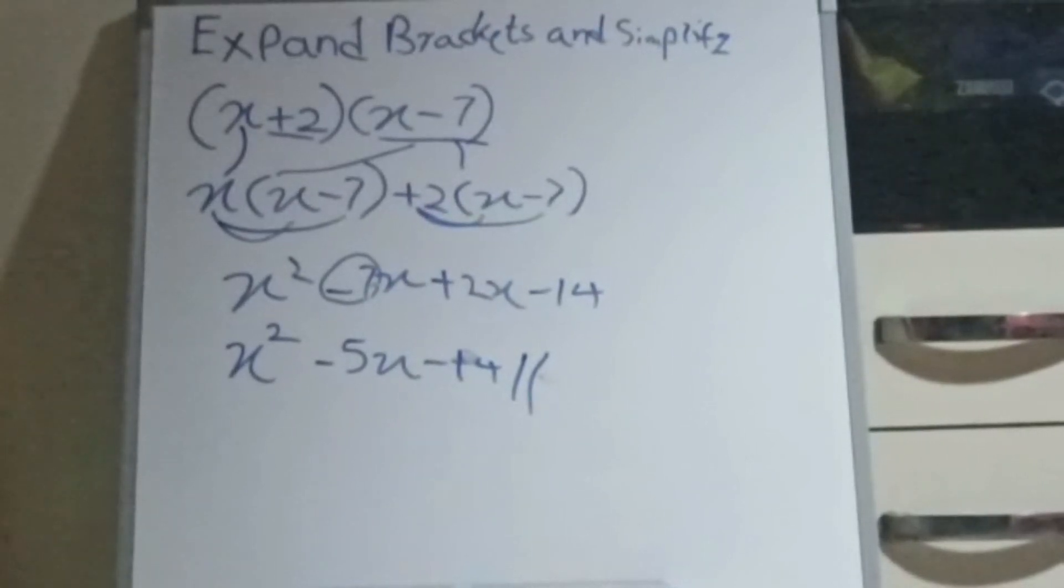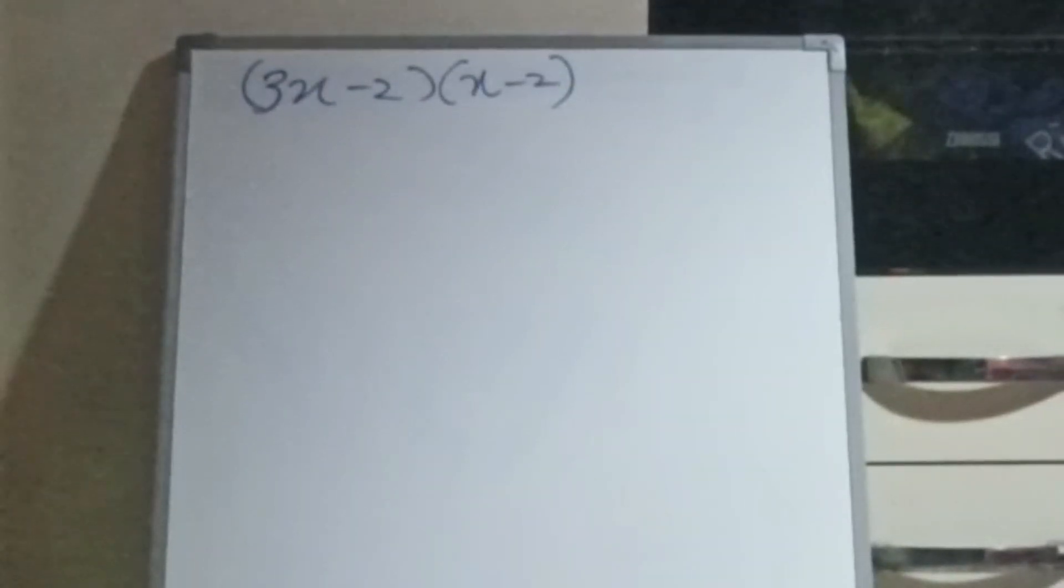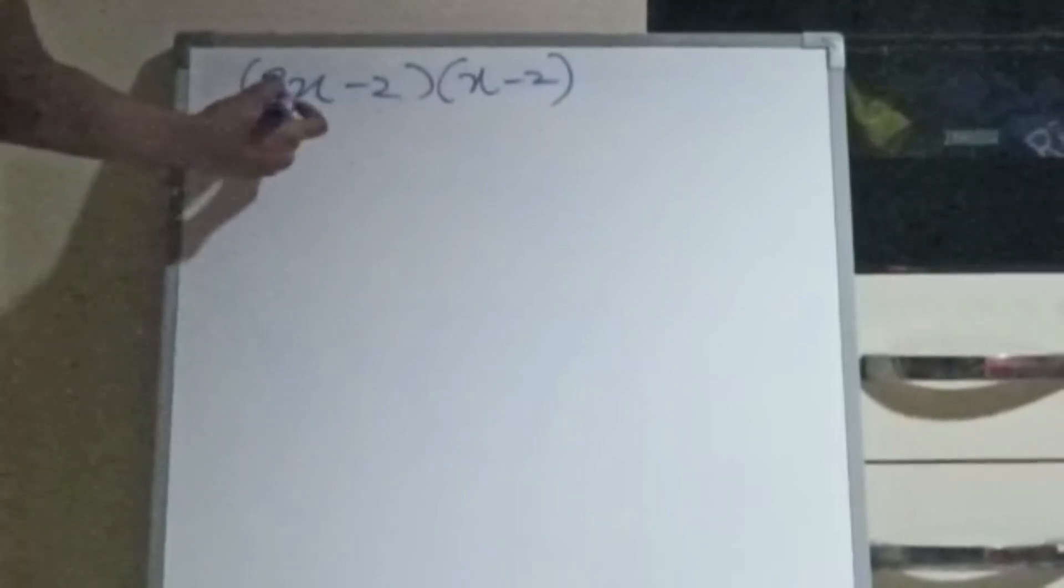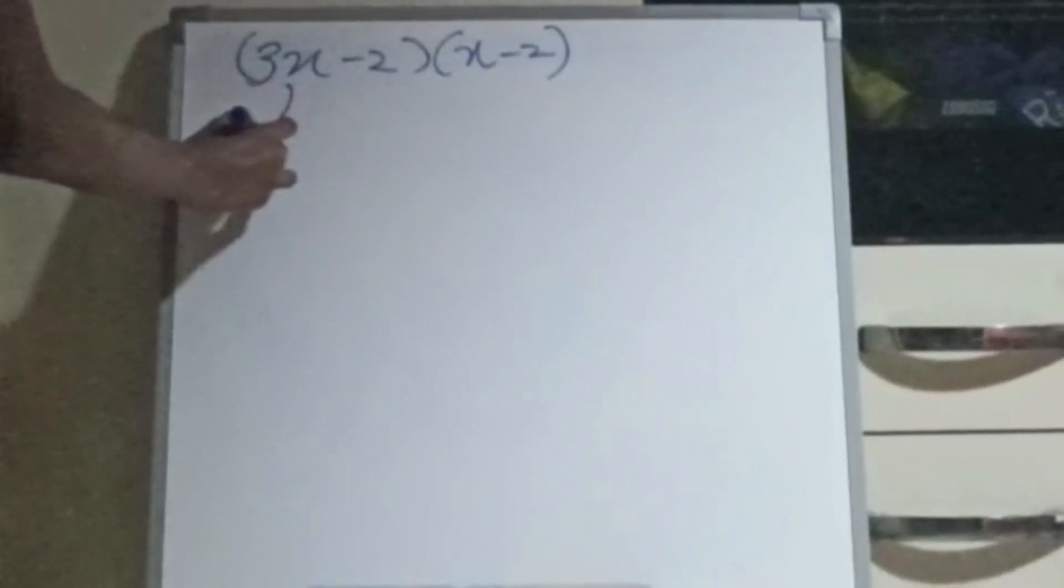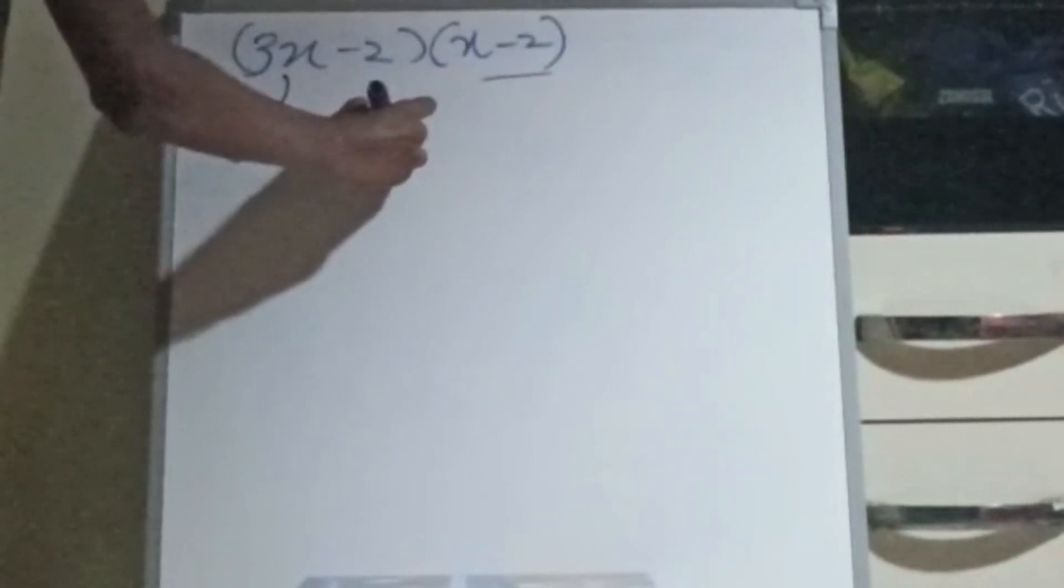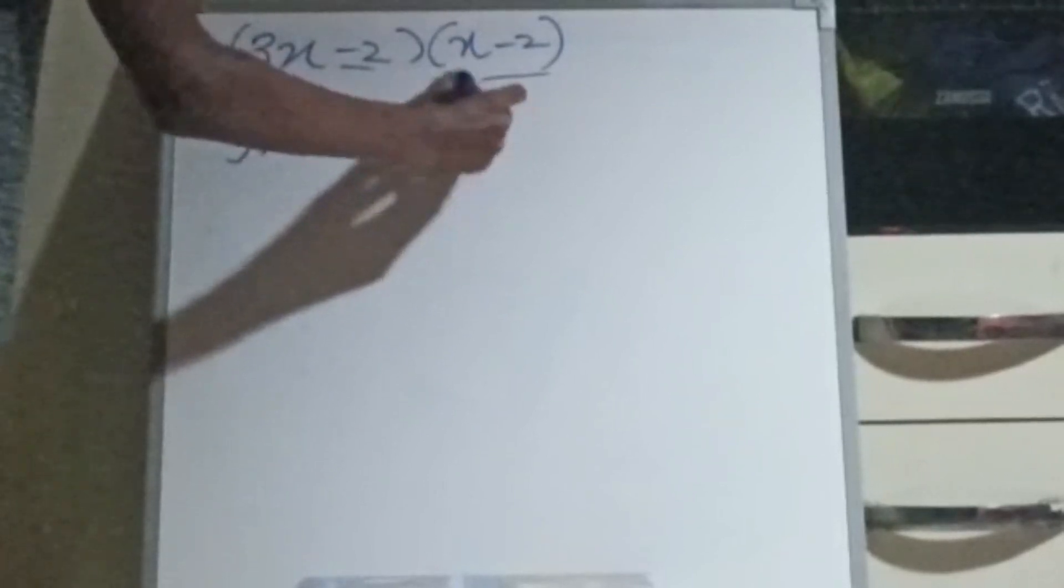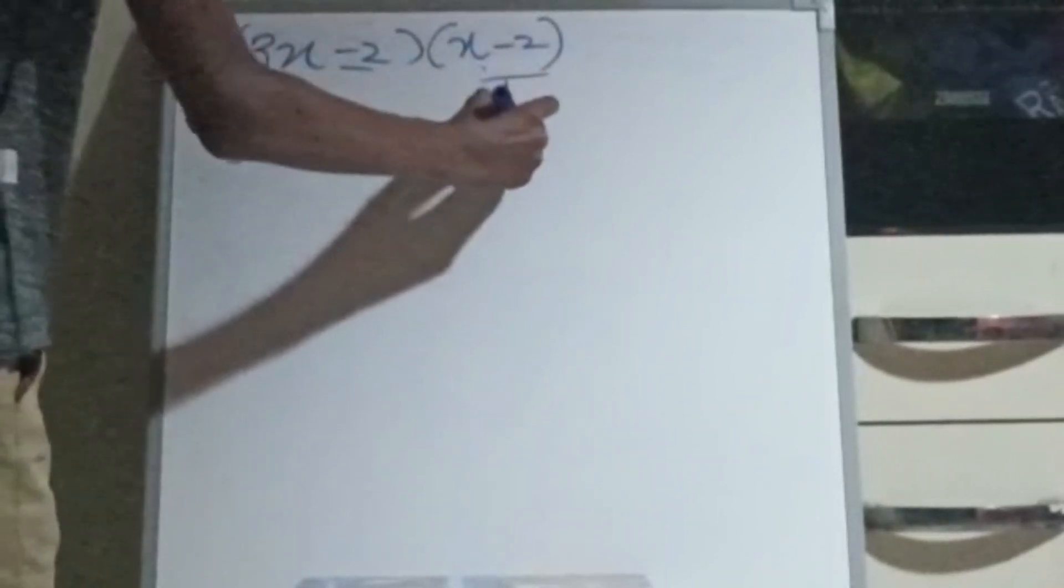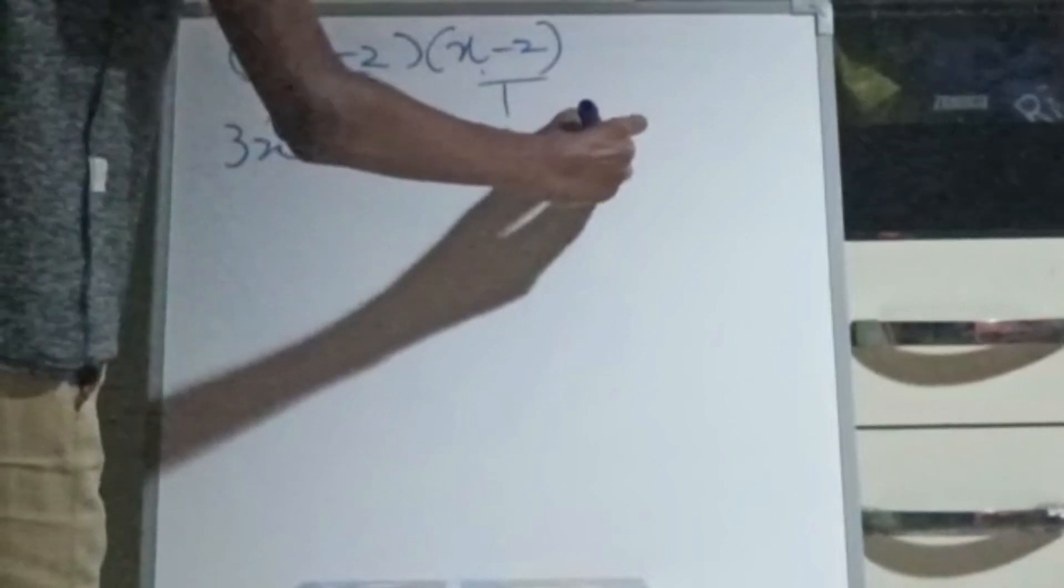We do another one. We will try this question. Take this 3x out. Then here 3x. Then here within the brackets here. x minus 2. Here minus 2 here. Again, this bracket here. x minus 2.